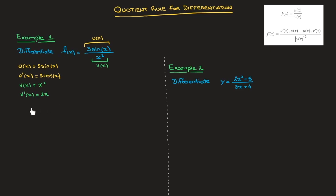Now that we have this working out of the way, we can go ahead and state that the derivative f dash of x equals u dash times v — so that's u dash of x times v of x — minus u times v dash — so that's u of x times v dash of x — and all of that written over v squared, so I'll just write v of x squared.